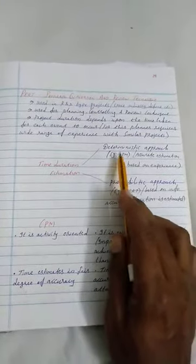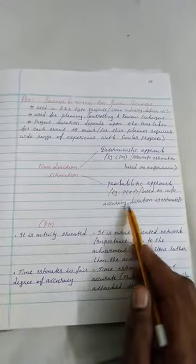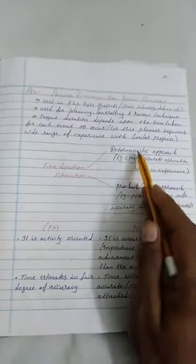In CPM, the deterministic approach will come under the category. In PERT, the probability approach will come under the category. These are the general intro of the Program Evaluation Review Technique.